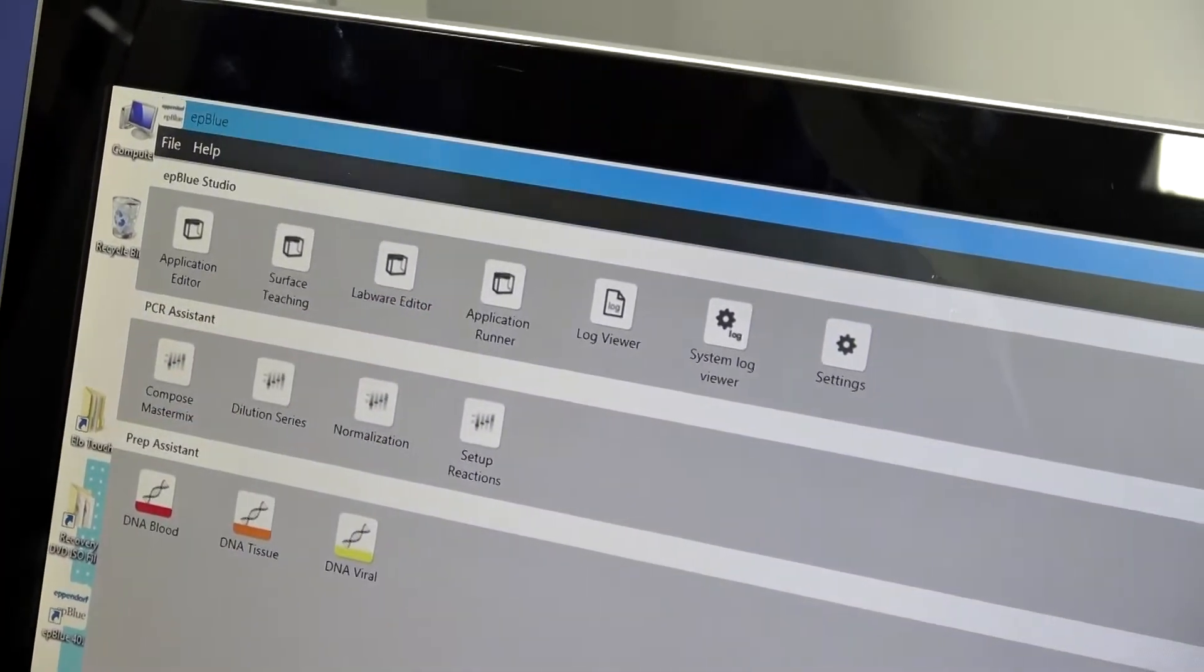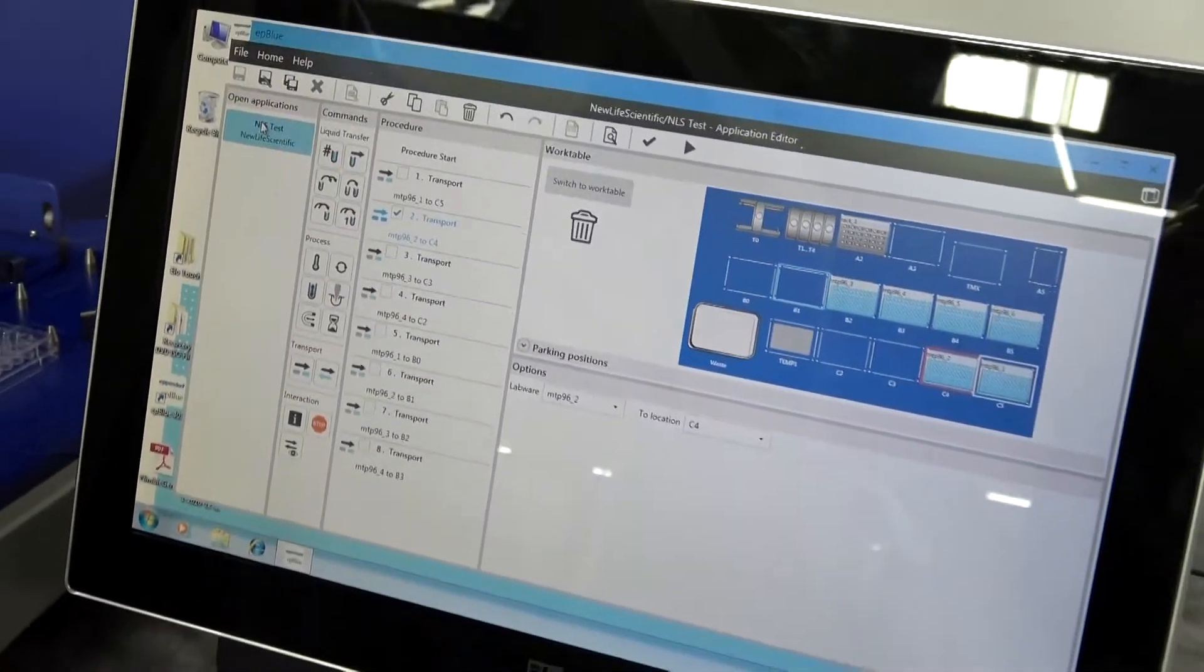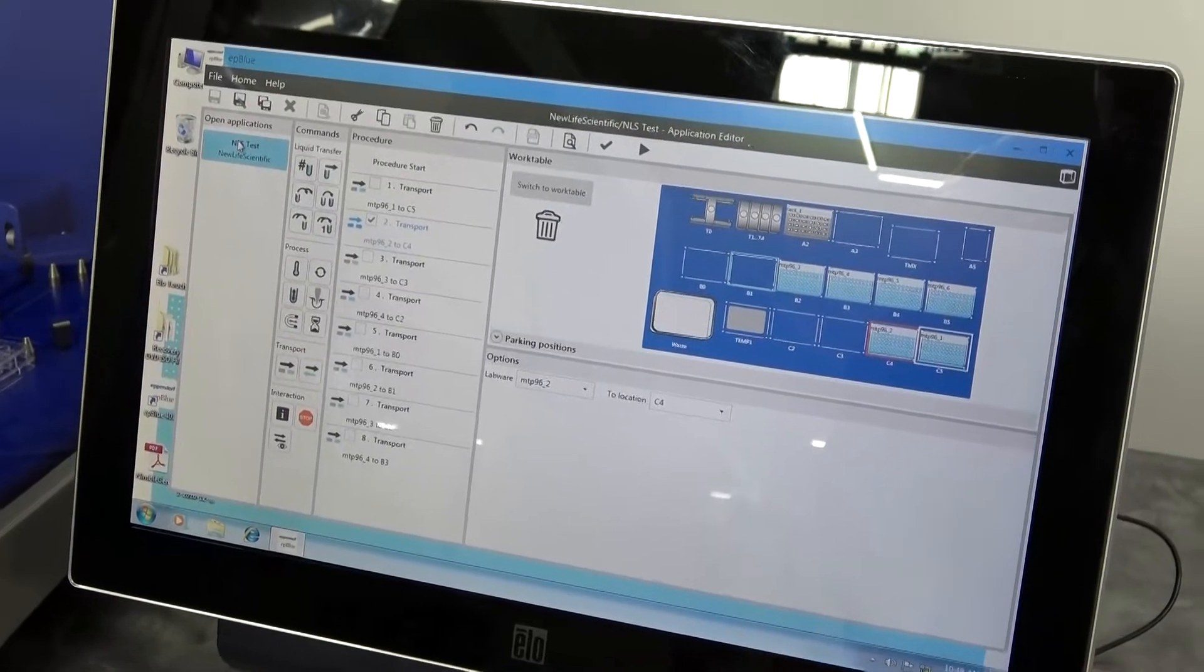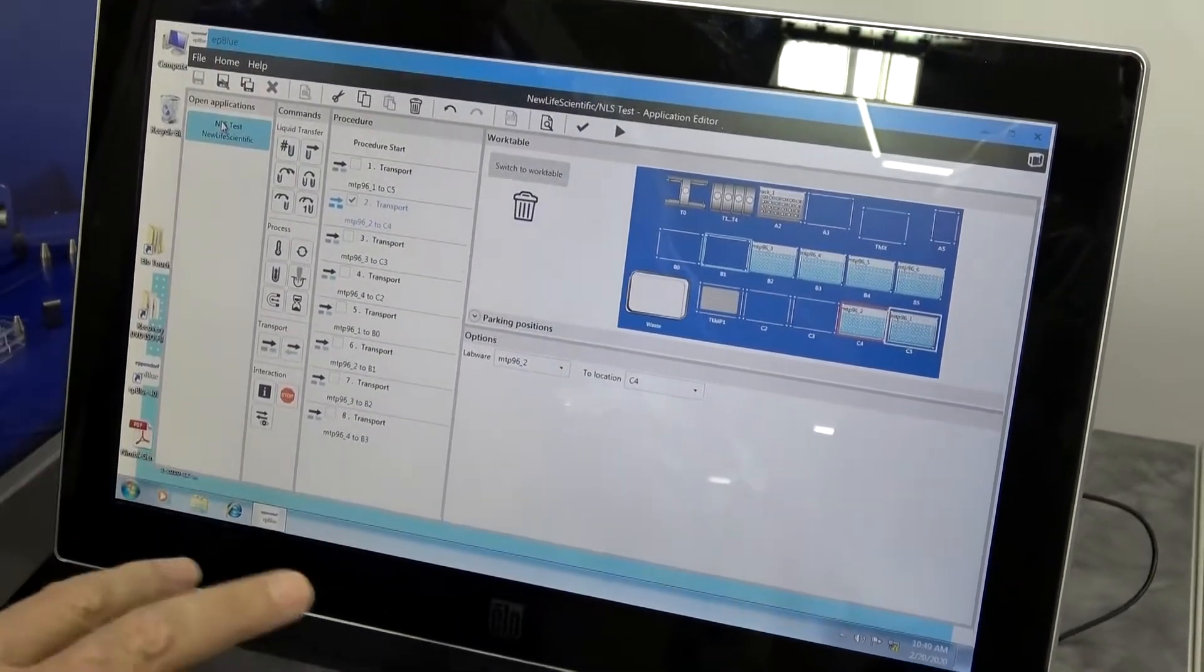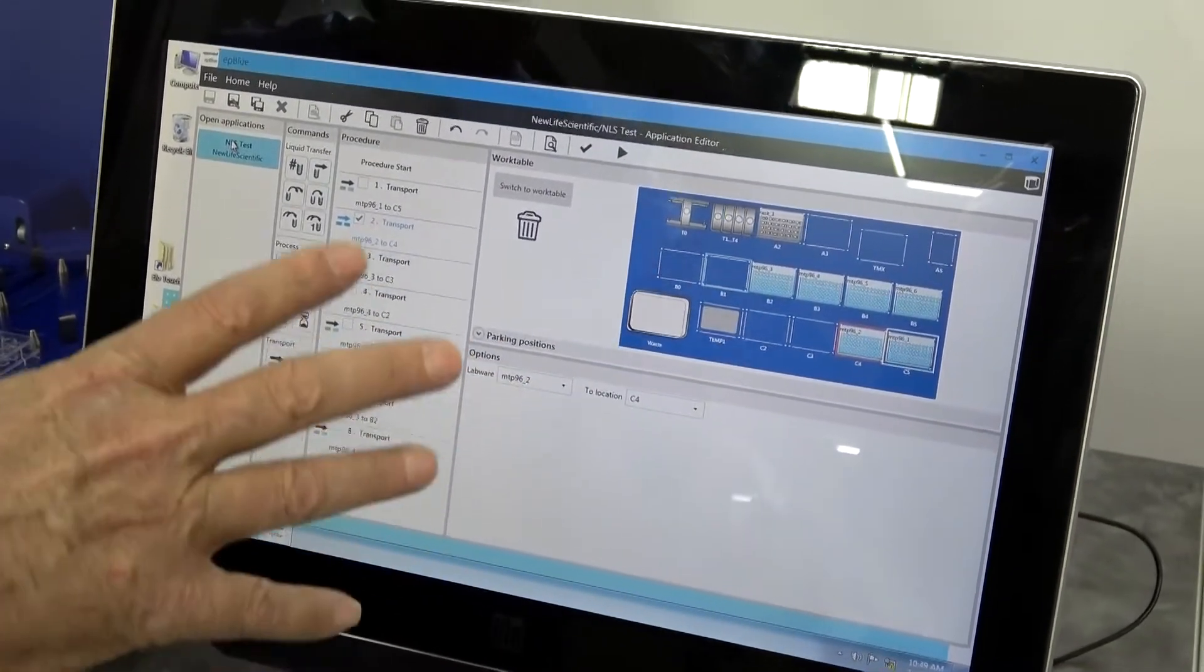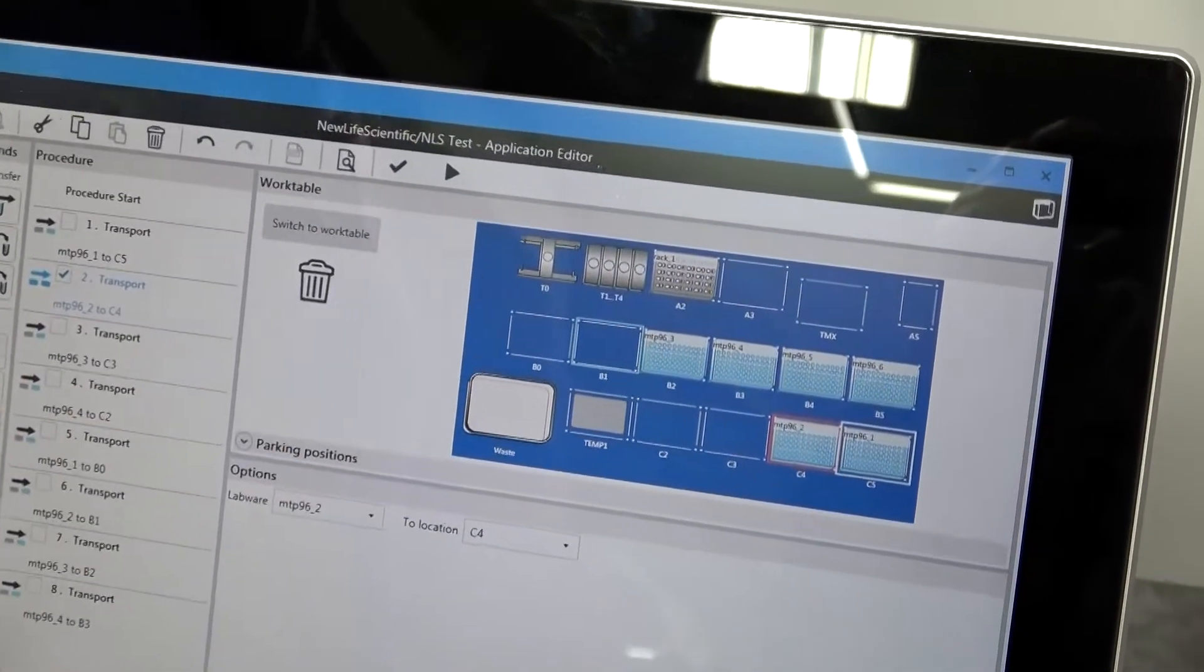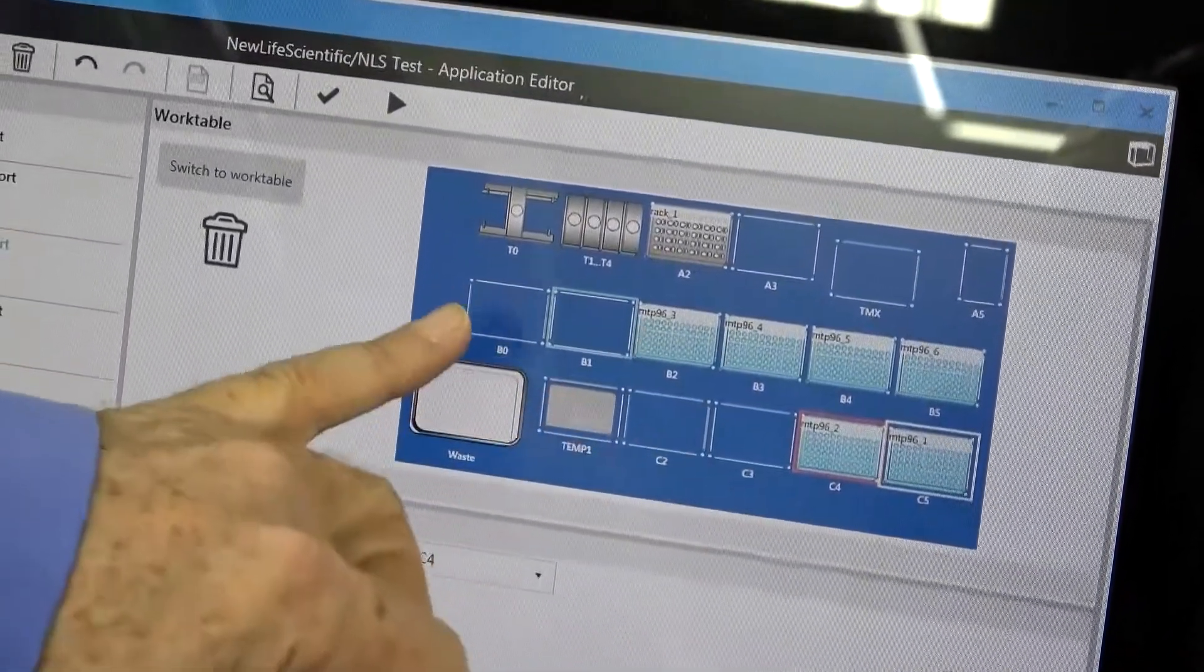In the administrator mode, you can do both. This is the application editor. It does have a link directly to the running mode, so you can experiment with your run. Very easy to use graphically, as most of them are now graphically inclined. This one does show if you're moving plates with this unit is equipped with a plate mover. It will represent that.